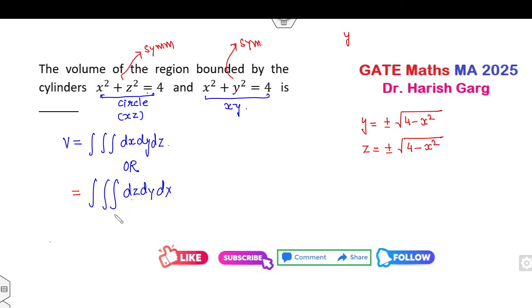So that is, if I take the limit it is minus root of 4 minus x square to plus root of 4 minus x square. Similarly for y, root of 4 minus x square to root of 4 minus x square. And the value of x will be minus 2 to plus 2. What does this mean? How you can integrate them? It's very simple.